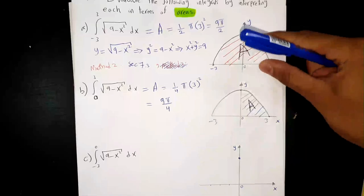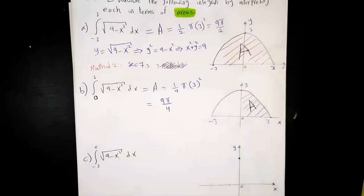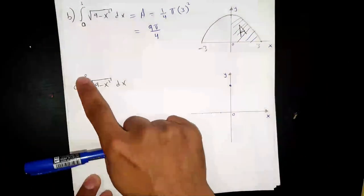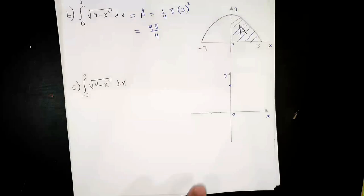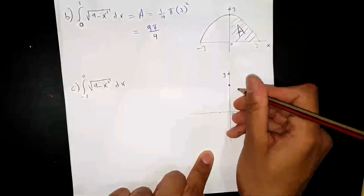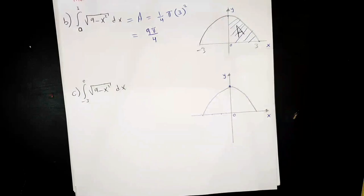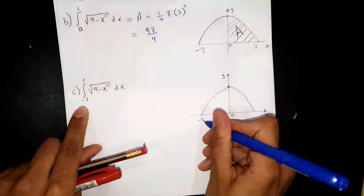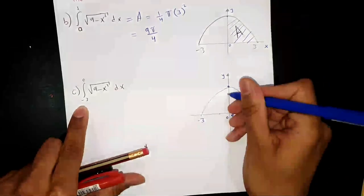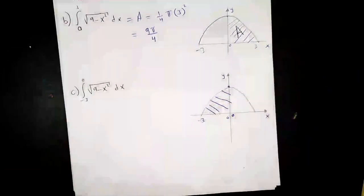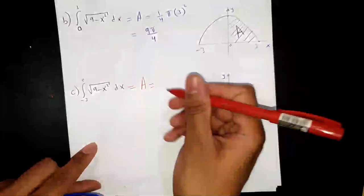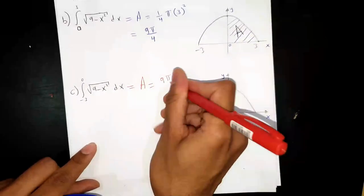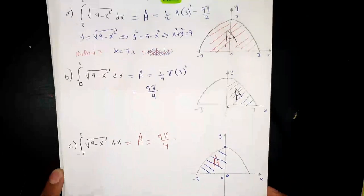Here we got a half-circle and there a quarter of a circle. These questions appear in exams a lot, so concentrate. Part C: integrate from -3 to 0 of √(9 - x²). Same question again — upper part of the circle, but we are interested in the left part from -3 to 0. This region is also a quarter of a circle, so the answer is 9π/4.